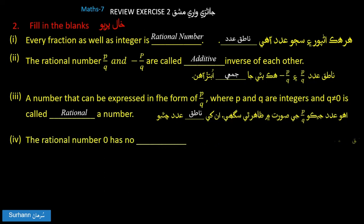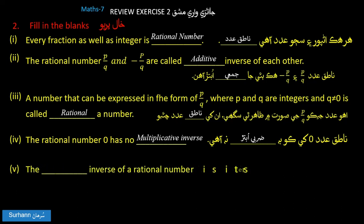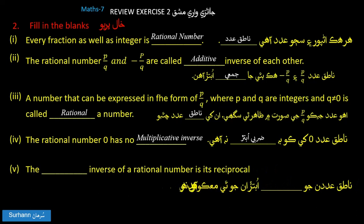The rational number 0 does not have a multiplicative inverse. The multiplicative inverse of a rational number is its reciprocal — you flip it and multiply.